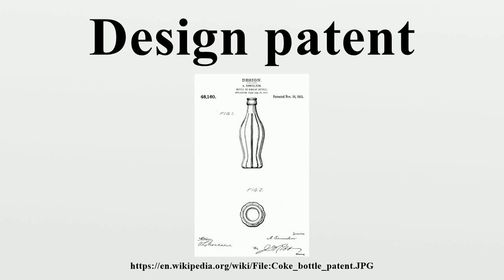Design patents with line drawings cover only the features shown as solid lines. Items shown as dotted lines are not covered. This is one of the reasons Apple was awarded a jury verdict in the U.S. case of Apple v. Samsung. Apple's patent showed much of their iPhone design as broken lines. It didn't matter if Samsung was different in those areas — the fact that the solid lines of the patent were the same as Samsung's design meant that Samsung infringed the Apple design patent.